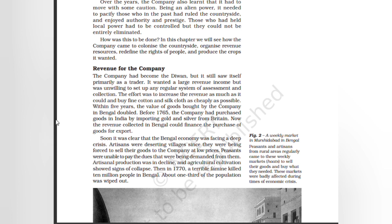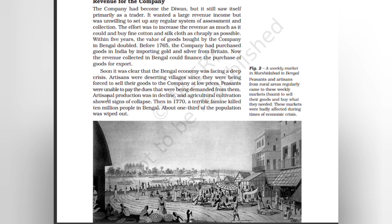Before 1765, the company had purchased goods in India by importing gold and silver from Britain. Now the revenue collected in Bengal could finance the purchase of goods for export. Soon it was clear that the Bengal economy was facing a deep crisis. Artisans were deserting villages since they were being forced to sell their goods to the company at low prices. Peasants were unable to pay the dues being demanded from them, and artisanal production was in decline.